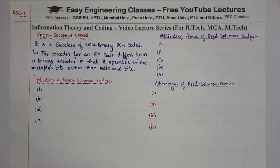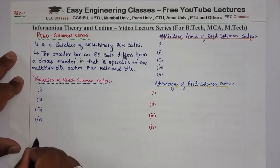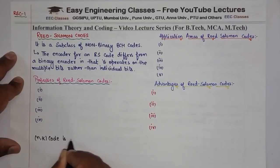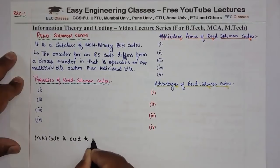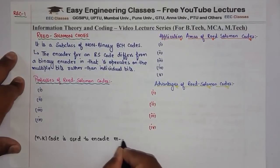We will see the properties of Reed Solomon Codes which will be helpful in your theory exams. We say that an (n, k) code is used to encode m-bit symbols.